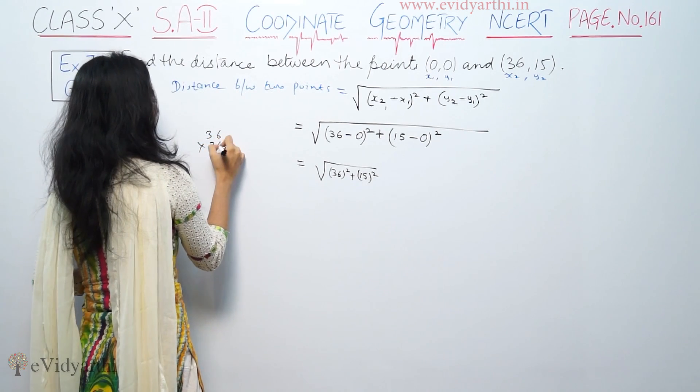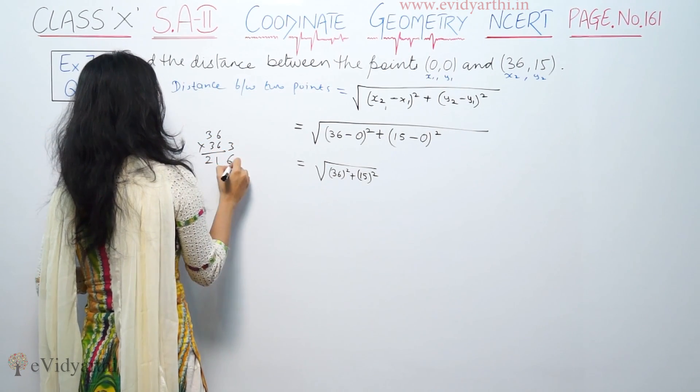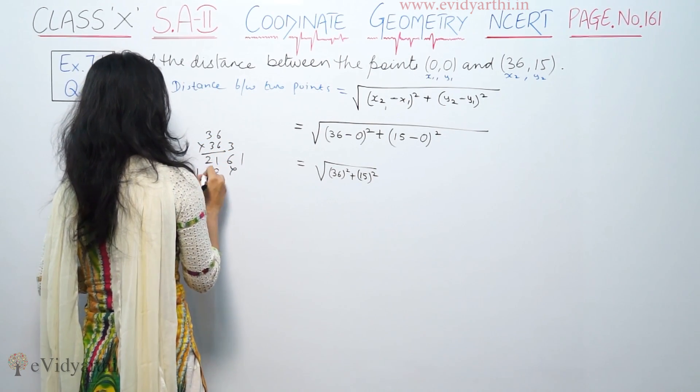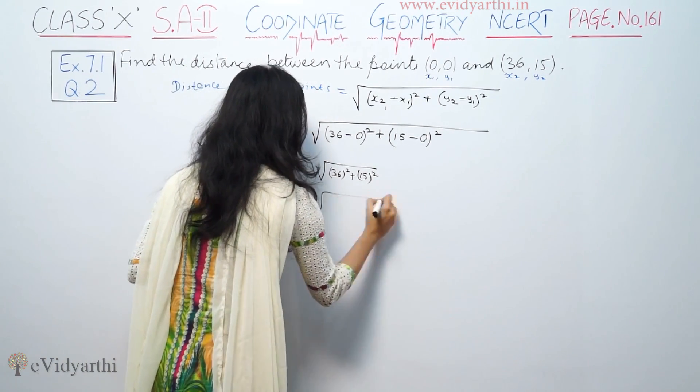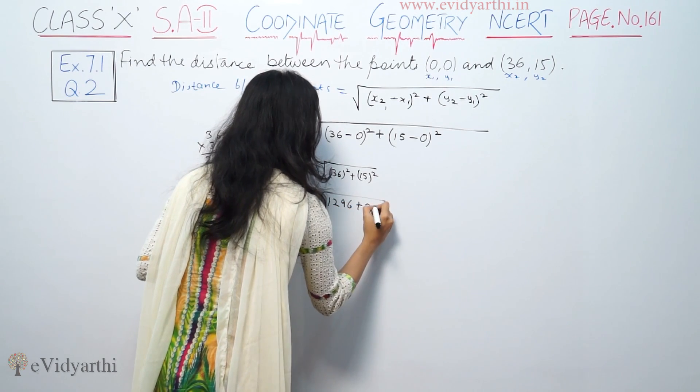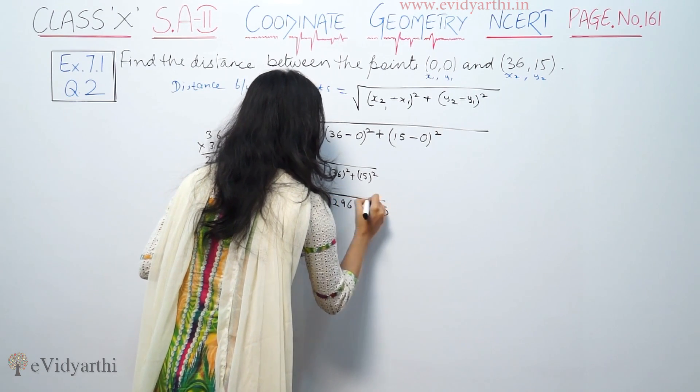So, 36 square—36 into 36. This is 1296, and 15 square is 225.